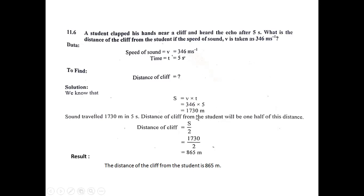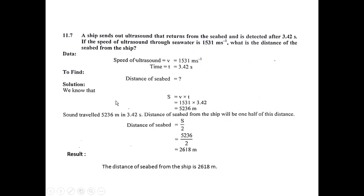The total distance covered — from student to cliff and back — is 1730 meters. To find the one-way distance between the student and the cliff, we divide 1730 by 2, giving 865 meters. Result: the distance of the cliff from the student is 865 meters.